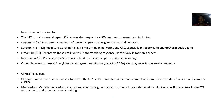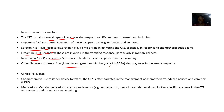As for the neurotransmitters involved, the CTZ contains several types of receptors that respond to different neurotransmitters. It contains dopamine receptors, serotonin receptors, histamine receptors, and neurokinin receptors. Other neurotransmitters present include acetylcholine and gamma-aminobutyric acid (GABA).